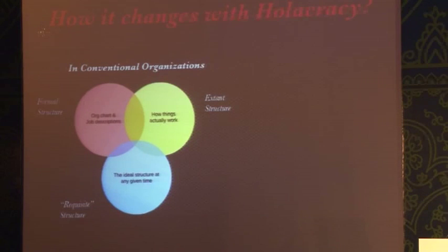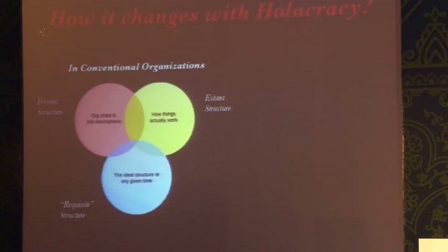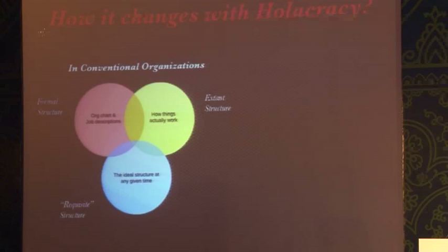The proponents of Holacracy say that in conventional organizations there are really three org structures. The formal structure — published on websites and intranets — shows the power lines and how people report to each other. Then there's the extent structure (the green one), which is how things actually get done — informal relationships and favors between people in different groups. And finally the requisite structure: how the ideal structure should be. What Holacracy tries to do is superimpose all of them into one single thing, so what it should be, what it is, and what it's told to be all look similar.